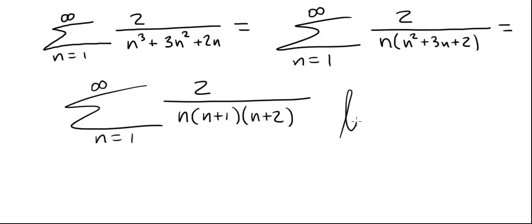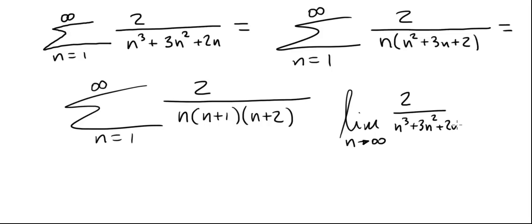Let's try using the test for divergence. We take the limit as n goes to infinity of 2 divided by n cubed plus 3n squared plus 2n, and this limit is 0, which means the test for divergence is inconclusive.